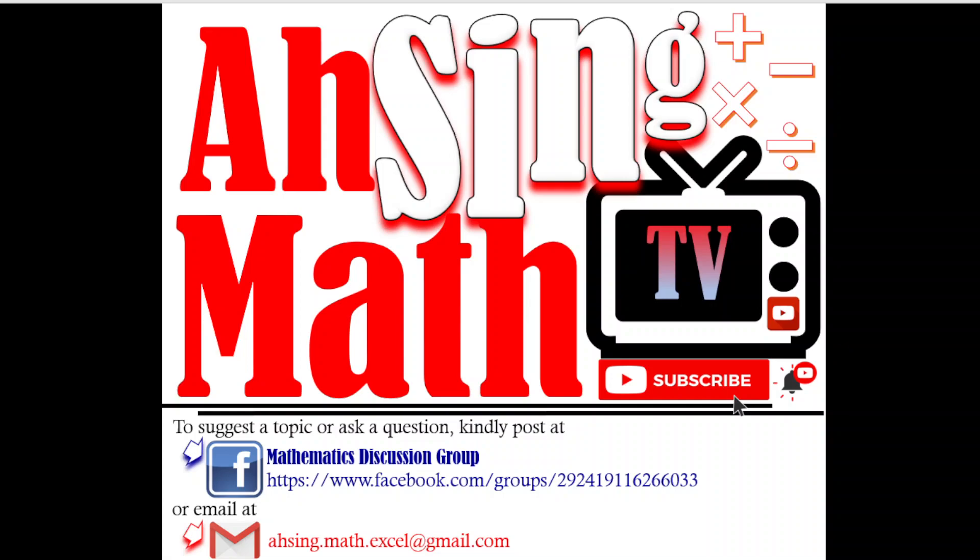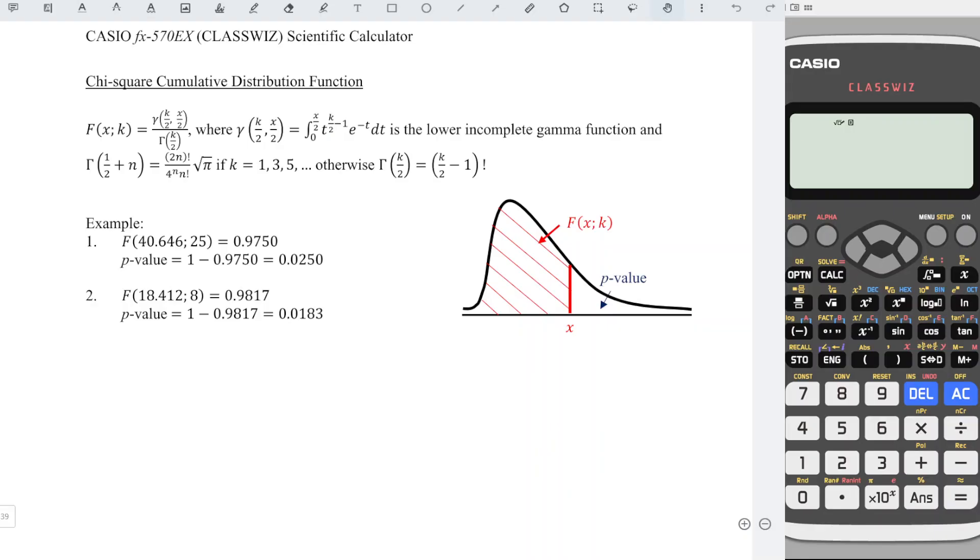Hi, this is Asynchronous Math TV. In this video we will learn how to obtain the p-value of a chi-square distribution by using a calculator. We have to bear in mind that there are two cases: one is when the degree of freedom is an odd number, one is when it is an even number.